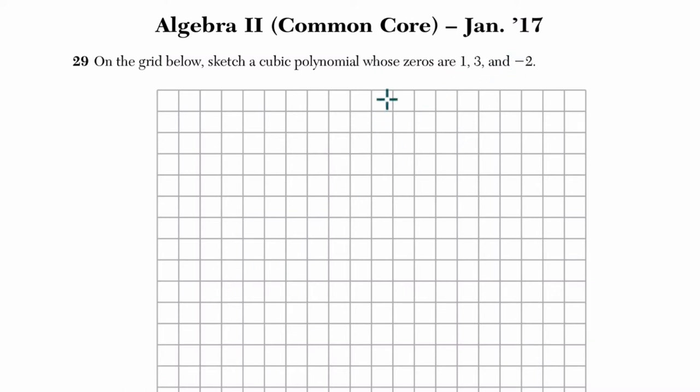So what I'm going to do is sketch my y-axis, my x-axis starting there, and the zeros—what does it tell me? That this thing has to cross at 1, and there's 1, 2, 3, and negative 2.